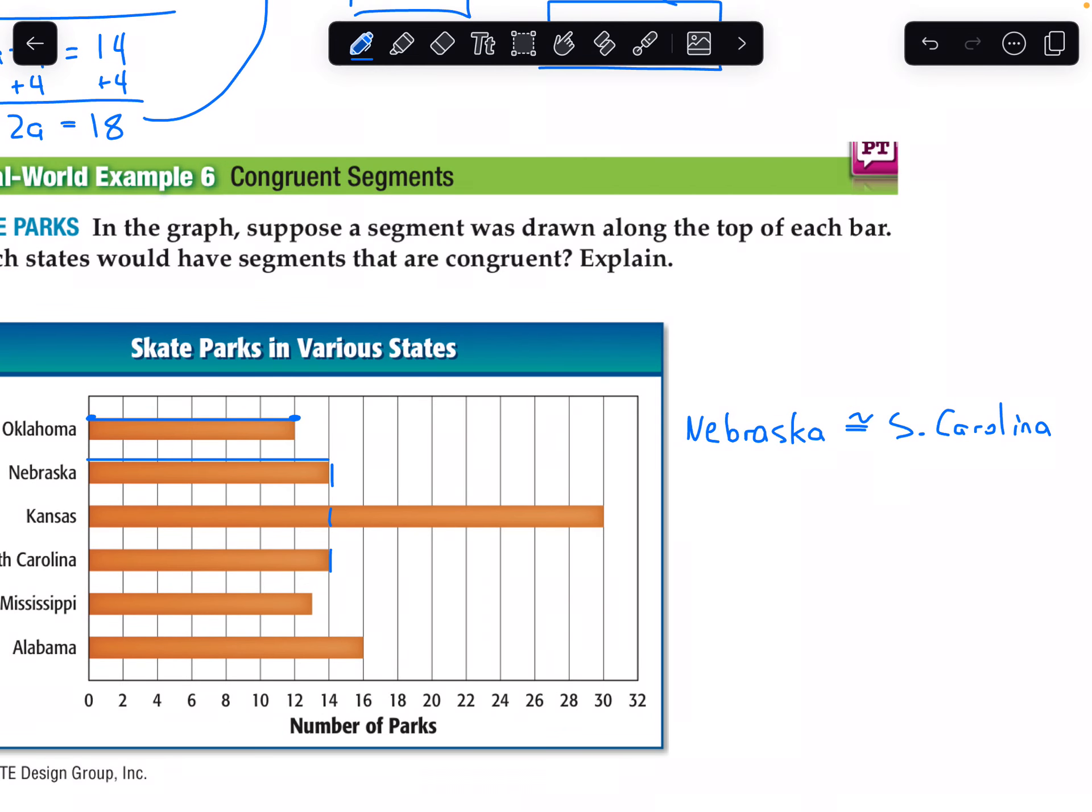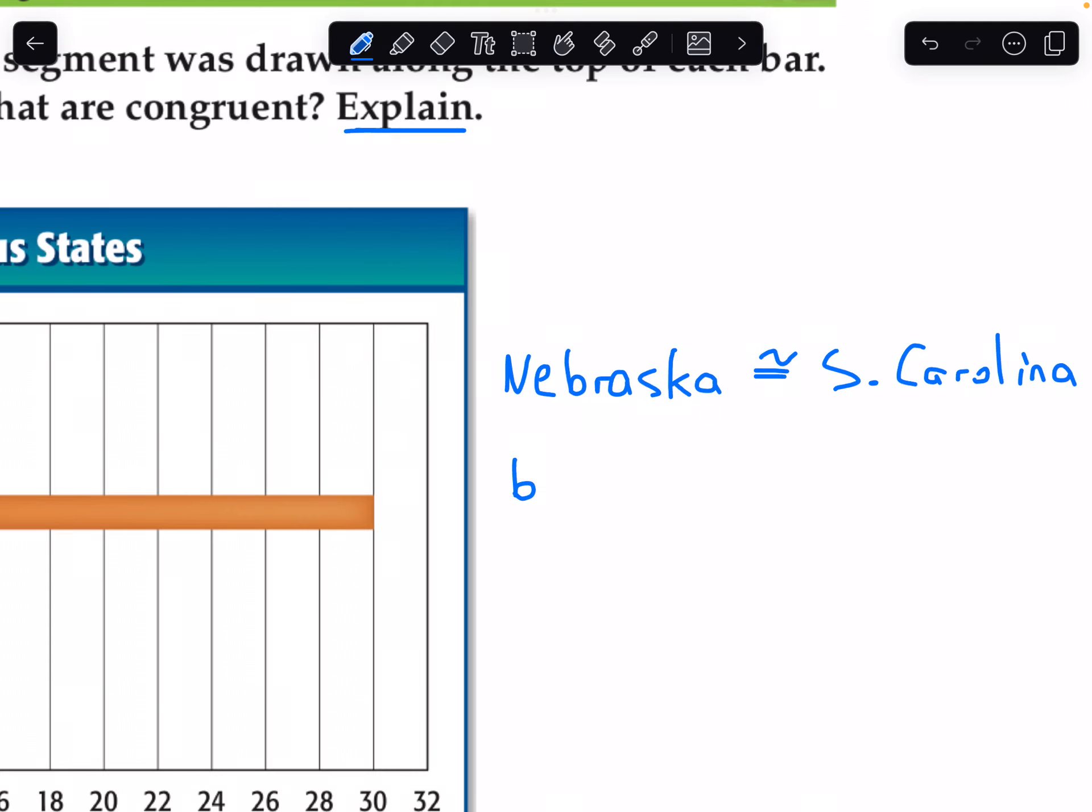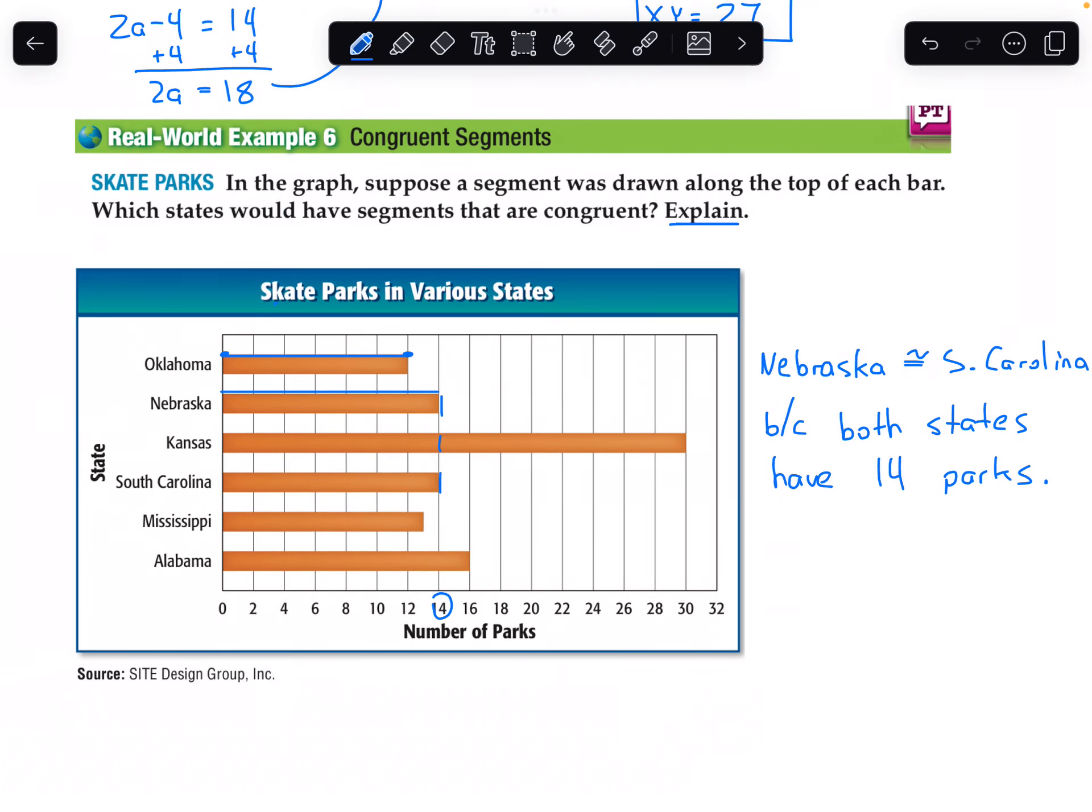Kansas is way out here. Mississippi is congruent to nobody. And Alabama also congruent to nobody. So those are the only two congruent to each other. What is our explanation? Both states have 14 parks. Because both states have 14 skate parks. Remember by definition, congruence is based on measurement, so you must indicate they have the same measure. In this case, number of parks.